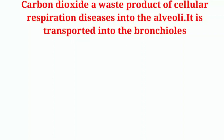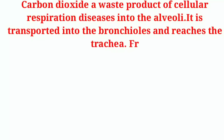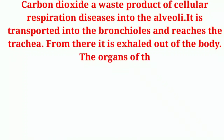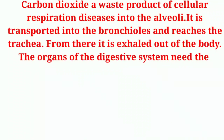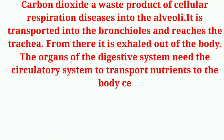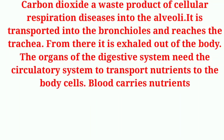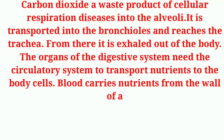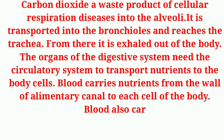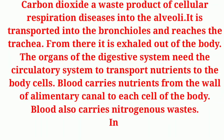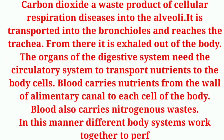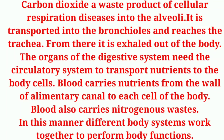Oxygen is transported into the bronchus and reaches the trachea, from where it is exhaled out of the body. The organs of the digestive system need the circulatory system to transport nutrients to the body cells. Blood carries nutrients from the wall of the alimentary canal to each cell of the body. Blood also carries nitrogenous waste. In this manner, different body systems work together to perform body functions.